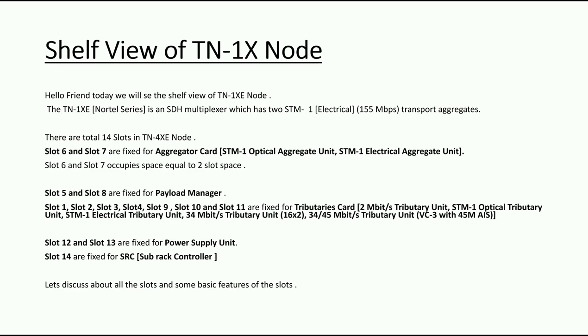There are total 14 slots in the TN-4XE node. Slot 6 and slot 7 are fixed for aggregator cards; slot 5 and slot 8 for payload manager. Slots 1, 2, 3, 4, 9, 10, and 11 are fixed for tributary cards. There are many tributary cards available for the NodTel, like 2 Mbit/s tributary card, STM-1 optical tributary card, STM-1 electrical tributary card, 34 Mbit/s tributary card, and 16×2 Mbit/s cards.